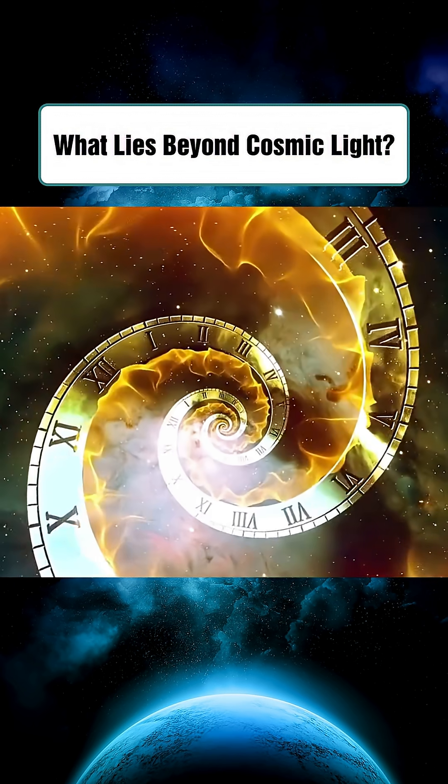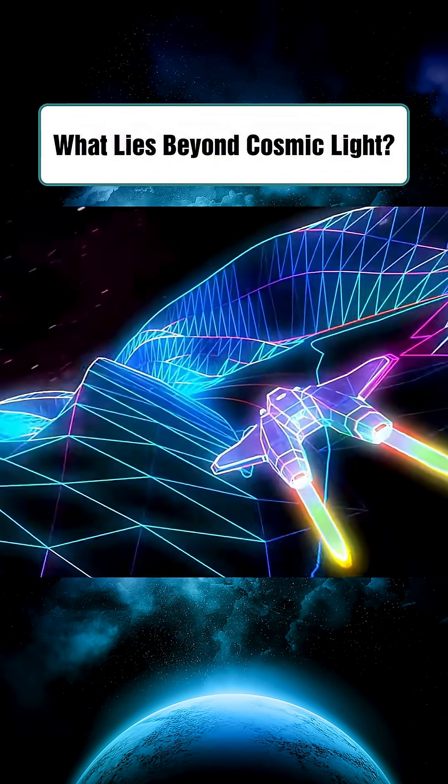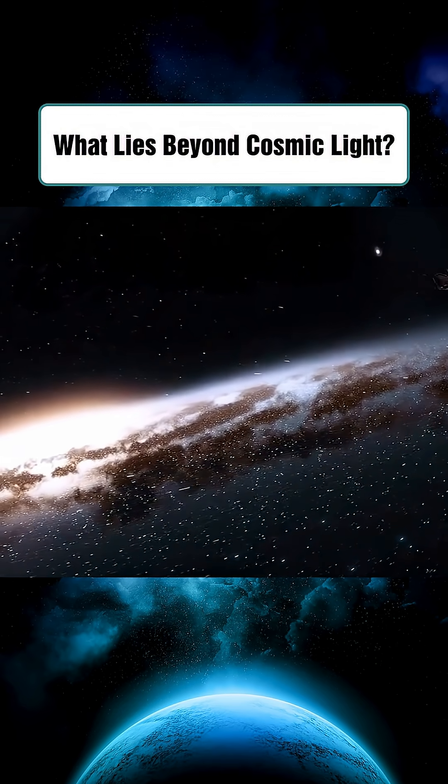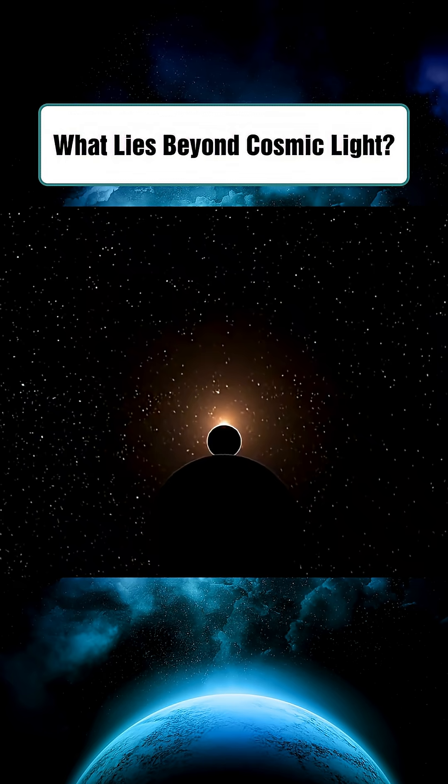The closest star, Proxima Centauri, is 4.22 light years away, so we see it as it was over 4 years ago. The galaxies captured by Webb and Hubble are billions of light years away, meaning we're seeing the universe in its infancy.